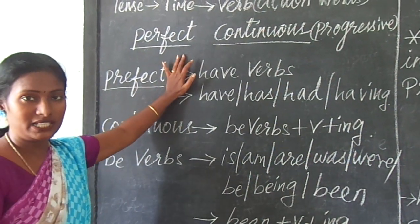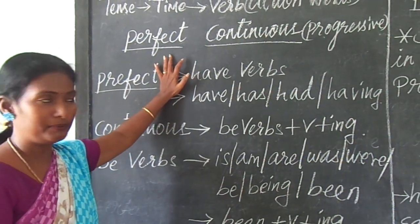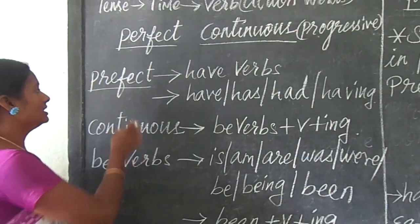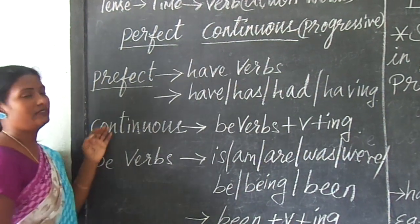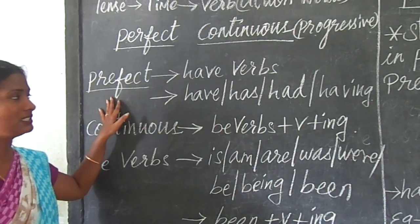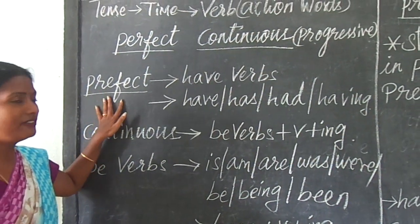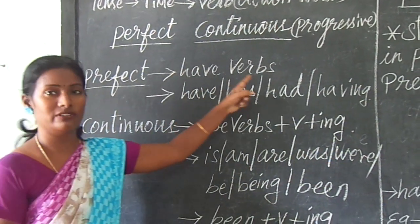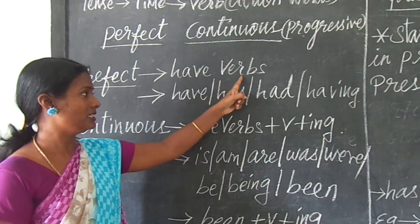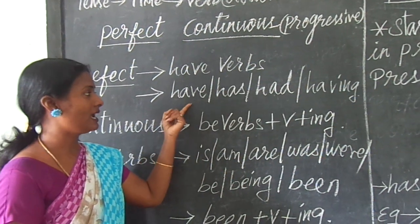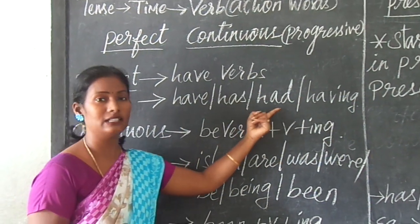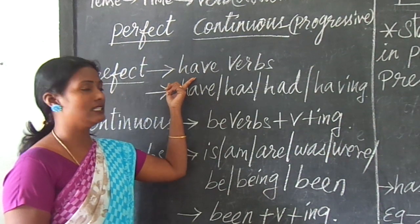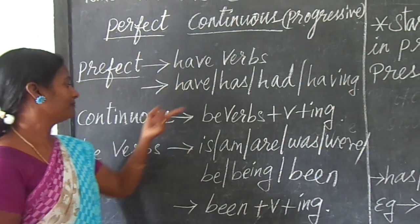So we shall see what is the basics for the perfect continuous tense. The very basic is: perfect always takes the have verbs. So here the have verbs are have, has, had, and having. These we say are have verbs.